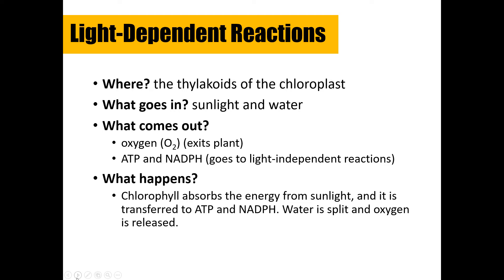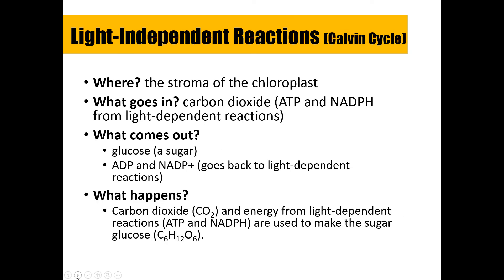Also produced during the light-dependent reactions are two molecules: NADPH and ATP (adenosine triphosphate), which is an energy molecule. These are not released as byproducts — they move into the second stage of photosynthesis to help fuel that process. In summary: chlorophyll absorbs energy from the sun, that energy is transferred to ATP and NADPH, water is split into oxygen and hydrogen, and the oxygen is released.